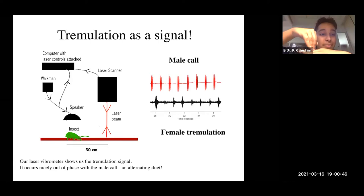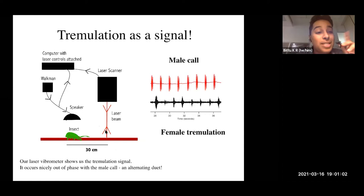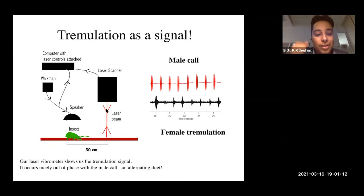Likewise, when this laser shines onto the branch — if the branch is vibrating, it acts like the train. Depending on whether the branch is moving towards or away from the laser, there will be a frequency shift in the reflected laser. The laser scanner picks up this changed frequency and determines whether the object it's shining upon is moving. When we used the laser vibrometer to see what happens when the insect vibrates, we found a very clear vibratory signal that she seems to be sending.